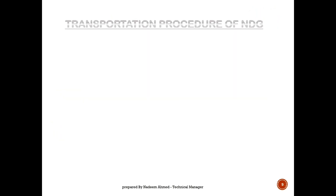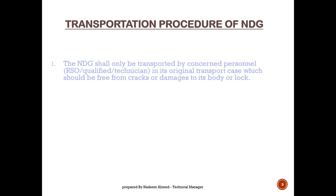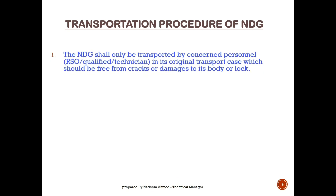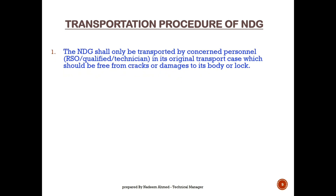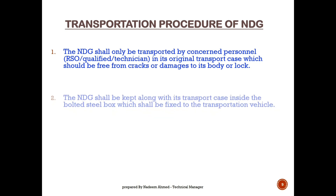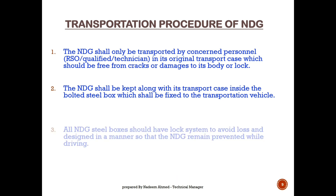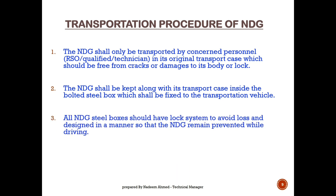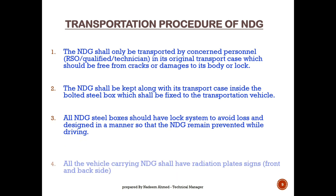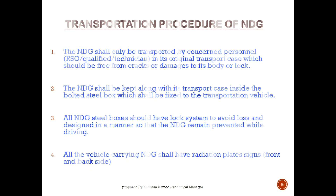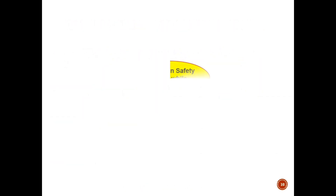The transportation procedure for the nuclear density gauge: the gauge shall be transported by a qualified technician or RSO. The gauge shall be kept inside a bolted steel box which shall be fixed to the transportation vehicle. All steel boxes should have a locked system to avoid loss, and be designed so that the NDG remains protected while driving. The vehicle carrying the nuclear density gauge shall have radiation plate signs on the front and back.